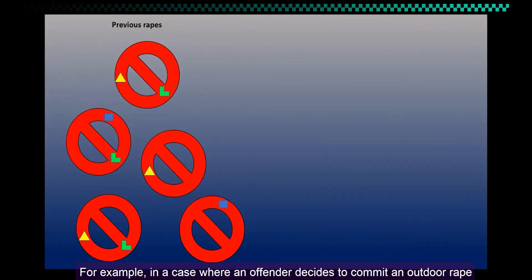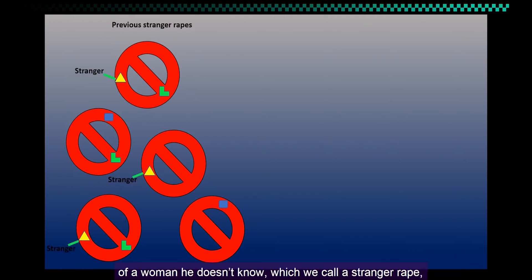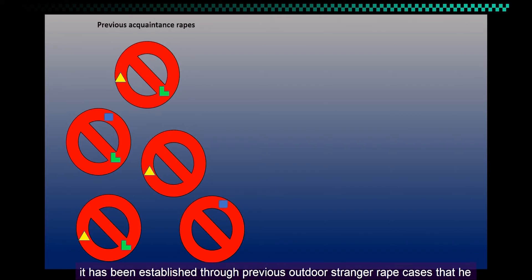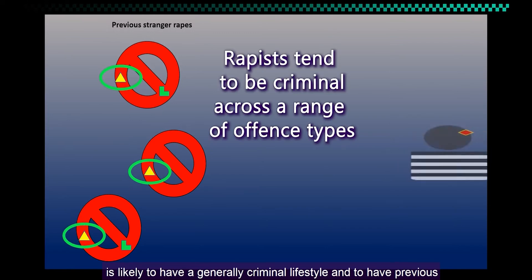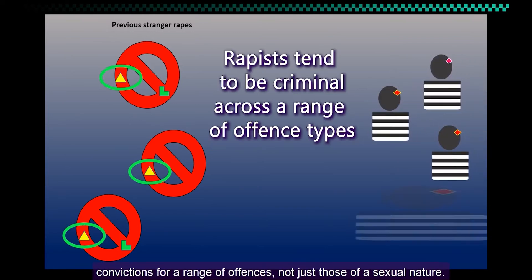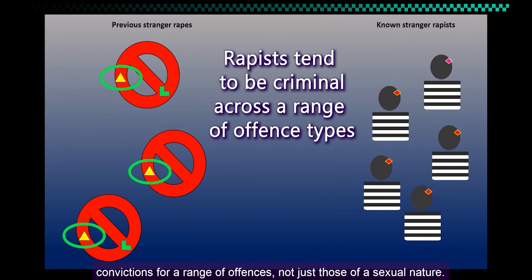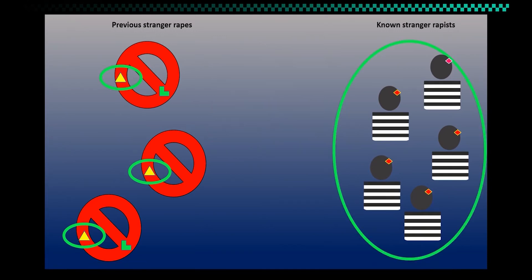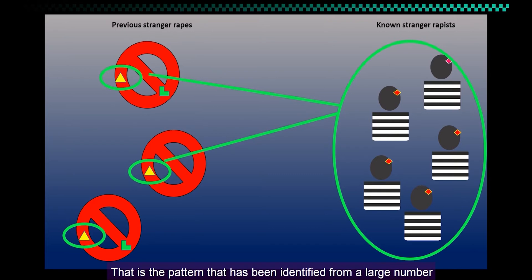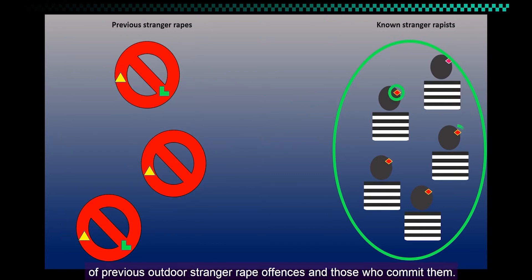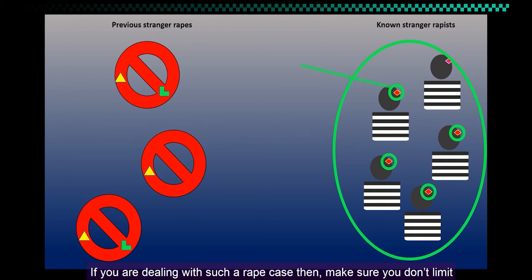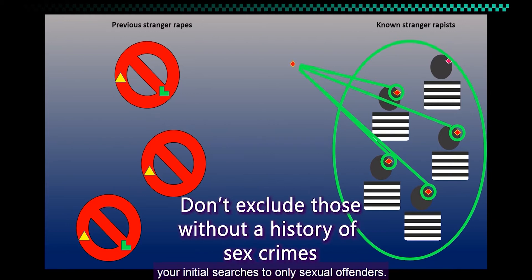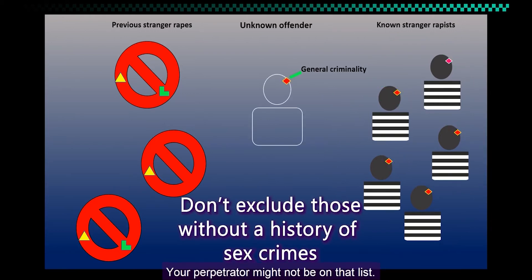For example, in a case where an offender decides to commit an outdoor rape of a woman he doesn't know — which we call a stranger rape — it has been established through previous outdoor stranger rape cases that he is likely to have a generally criminal lifestyle and to have previous convictions for a range of offenses, not just those of a sexual nature. That is the pattern identified from a large number of previous outdoor stranger rape offenses. If you are dealing with such a case, make sure you don't limit your initial searches to only sexual offenders — your perpetrator might not be on that list.